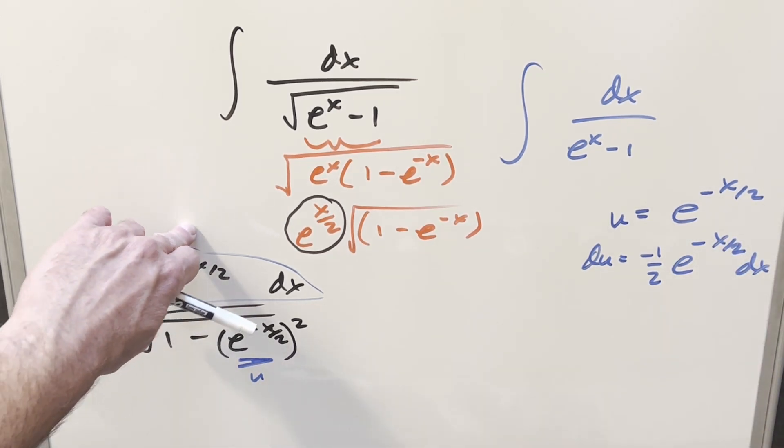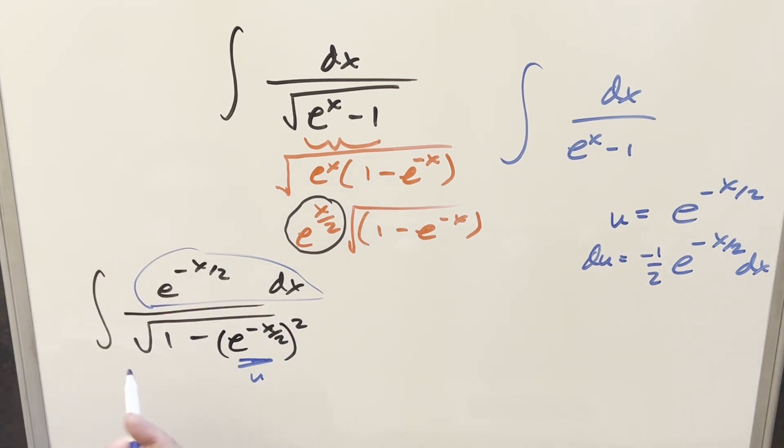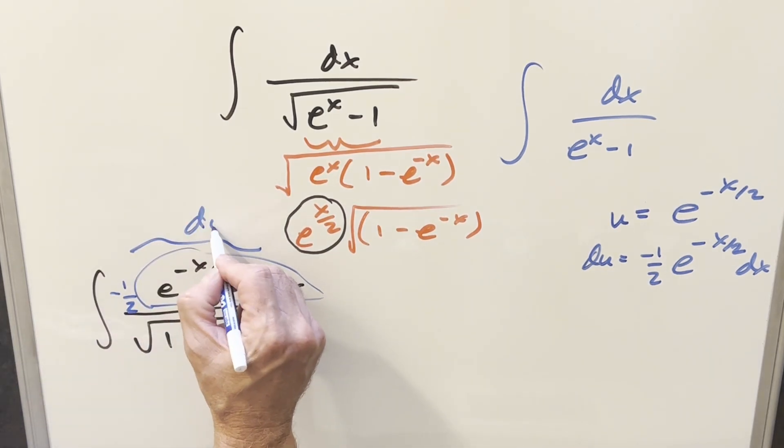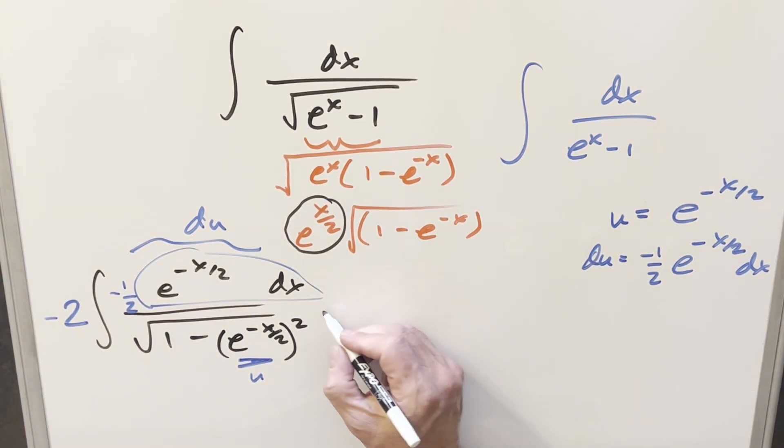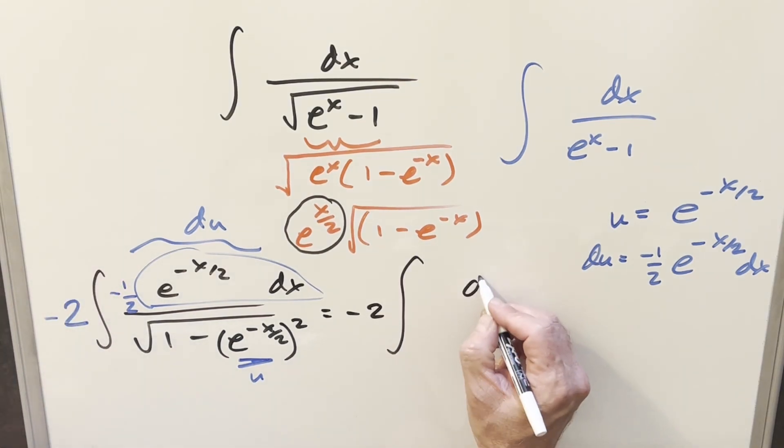So then we almost have our numerator set up to match the du. All I need to do is multiply in minus one-half here. Then all of this is going to be du. I don't want to change it, so let's multiply by minus 2 out in front. We'll go ahead and substitute first, bring over the minus 2, and the whole numerator is just going to be du over square root 1 minus u squared.